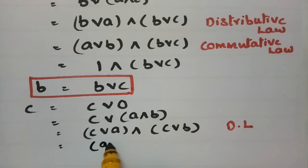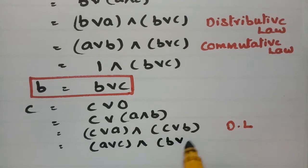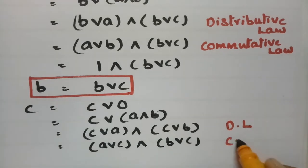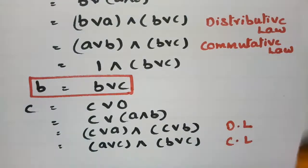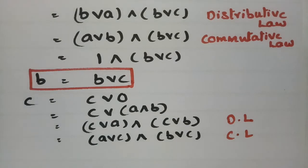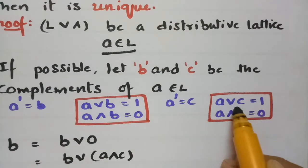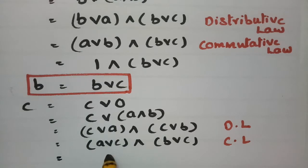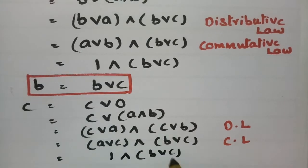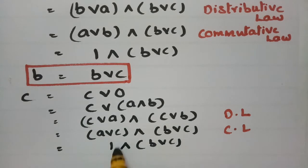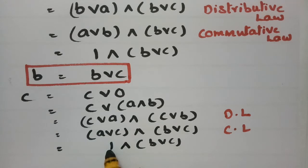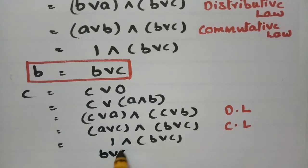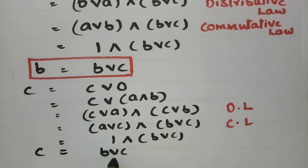Using the commutative law, C join A becomes A join C. So we have (A join C) meet (B join C). From our conditions, A join C equals 1 since the complement of A equals C. So this becomes 1 meet (B join C). Meet is the greatest lower bound, so 1 meet (B join C) equals B join C. Therefore, C equals B join C as well.